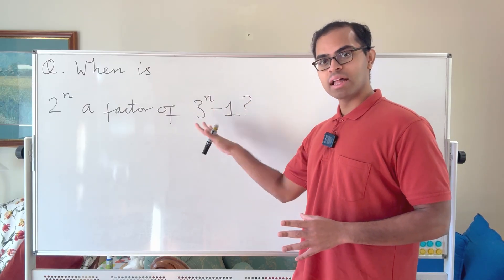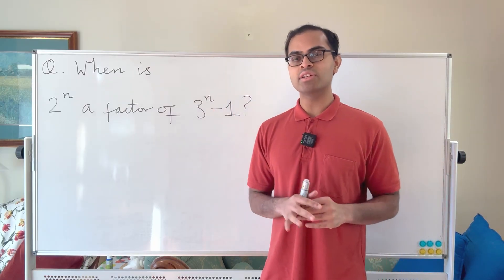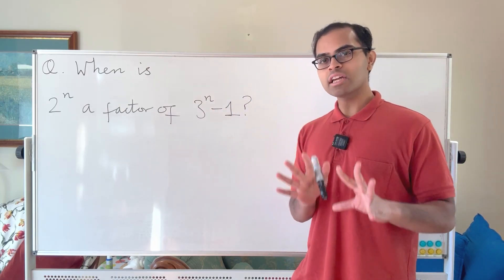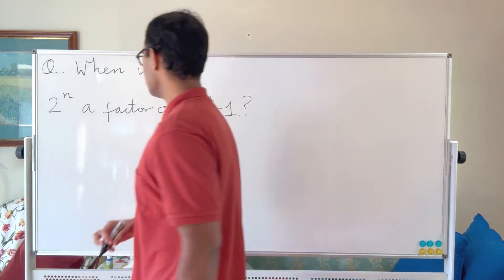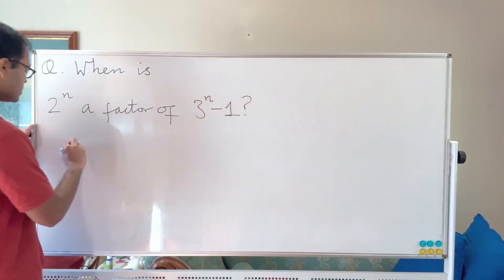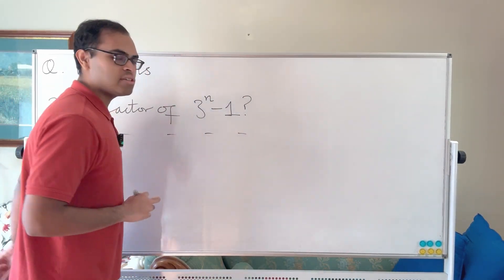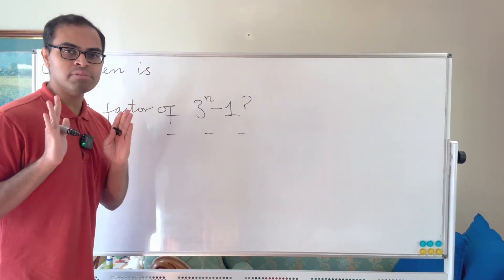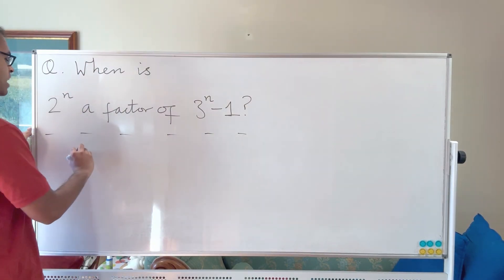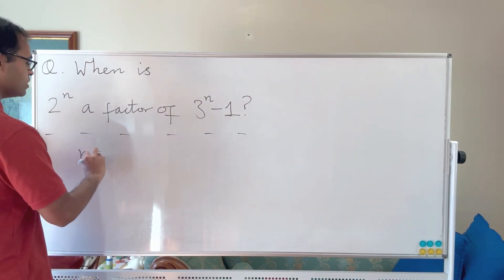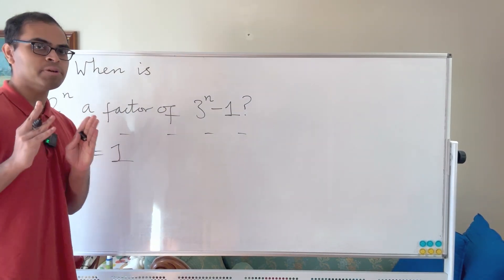In order to find out what the answer is, we're going to start off with small values of n and then go through some general number theory principles. The first thing to do is think about small values of n, and you'll see something quite crazy at first glance — a pattern that doesn't actually persist.